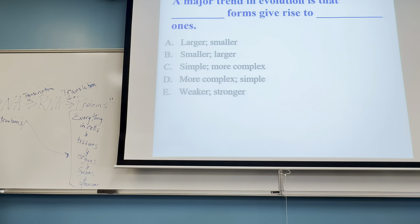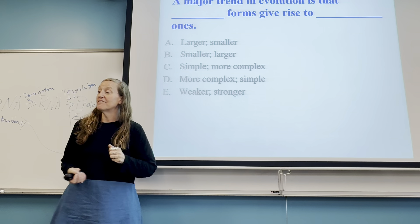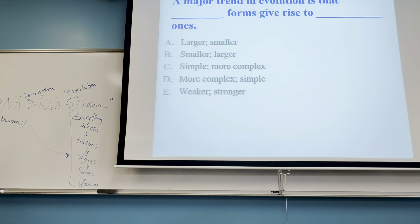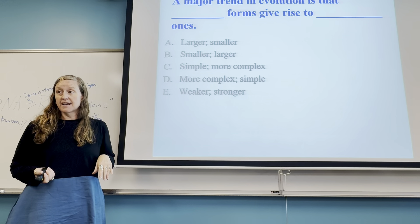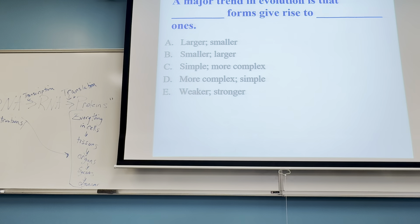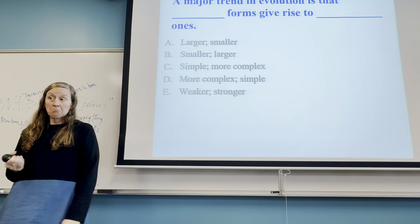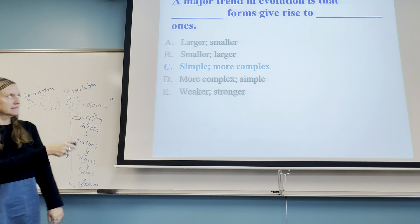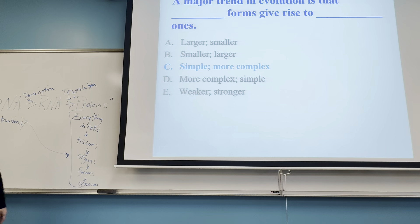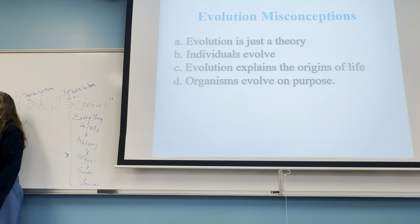Reflecting on evidence for evolution: a major trend in evolution is that simple forms give rise to more complex forms. It doesn't consistently go from larger to smaller or smaller to larger. More complex forms don't give rise to simpler ones. And we avoid saying 'weaker give rise to stronger' — we don't use that language. So the correct answer is: simple forms give rise to more complex forms. Now let's talk about a few evolutionary misconceptions.